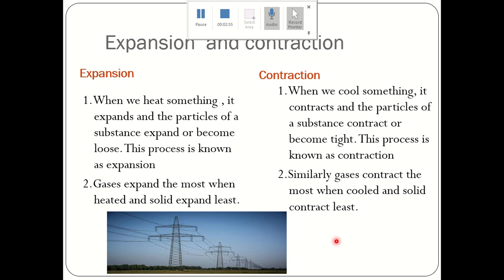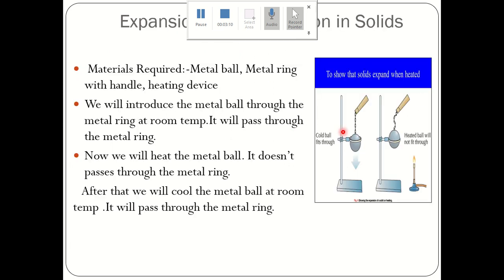When we heat something, the substance increases in size. When we cool something, the substance decreases in size or becomes tight. To understand expansion and contraction, we will perform two experiments. First, we will understand how expansion and contraction occurs in solids — to show that solids expand when heated and contract when cooled.